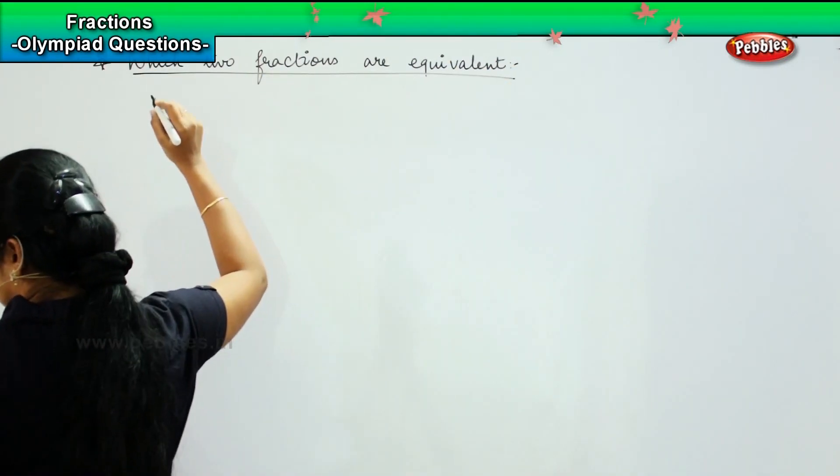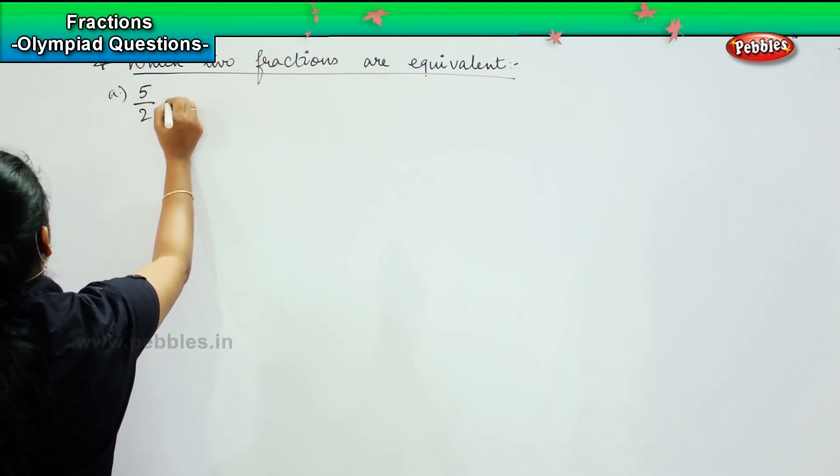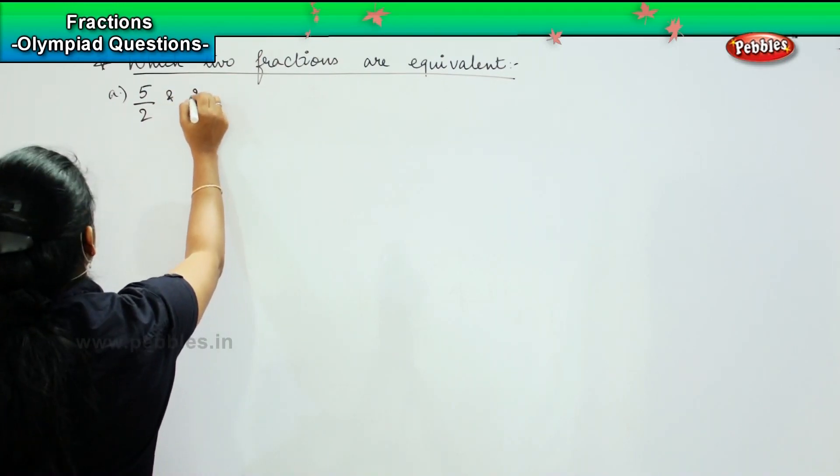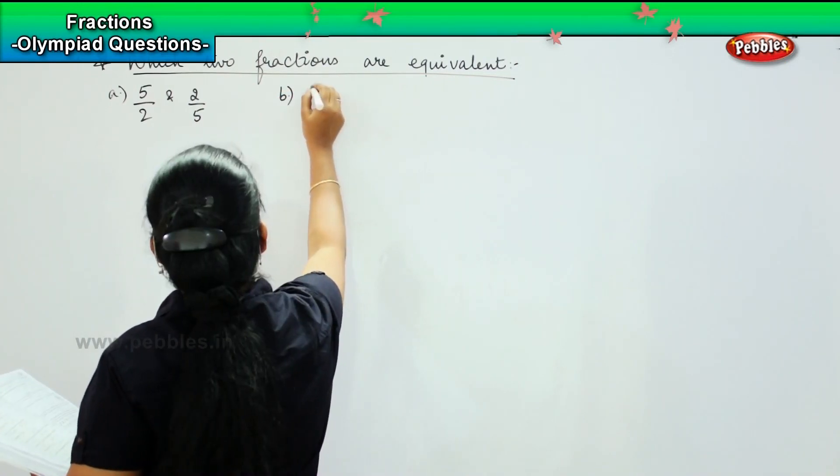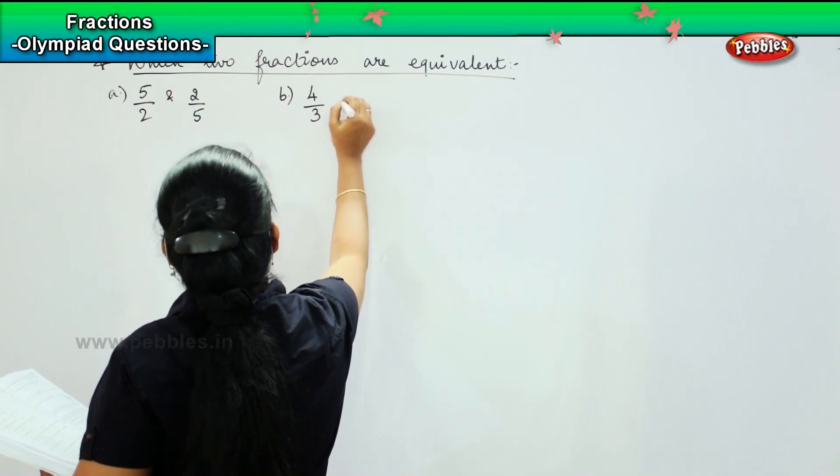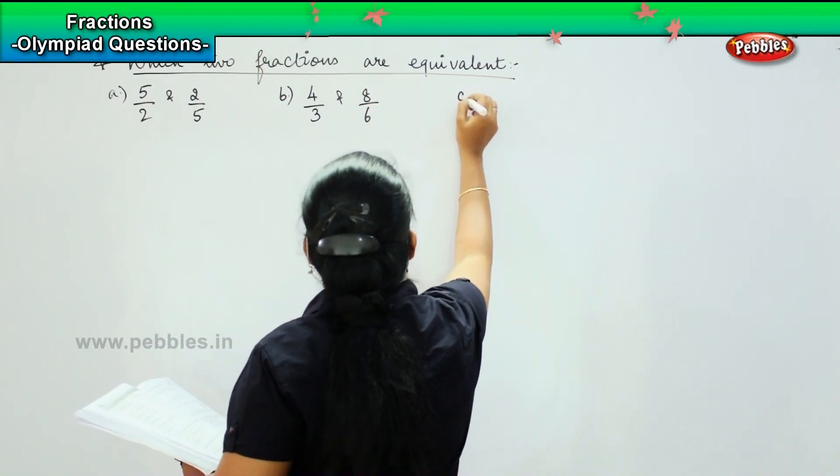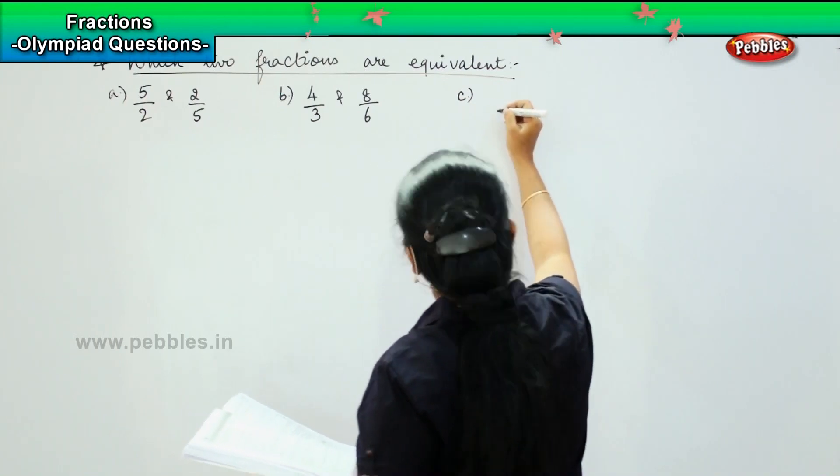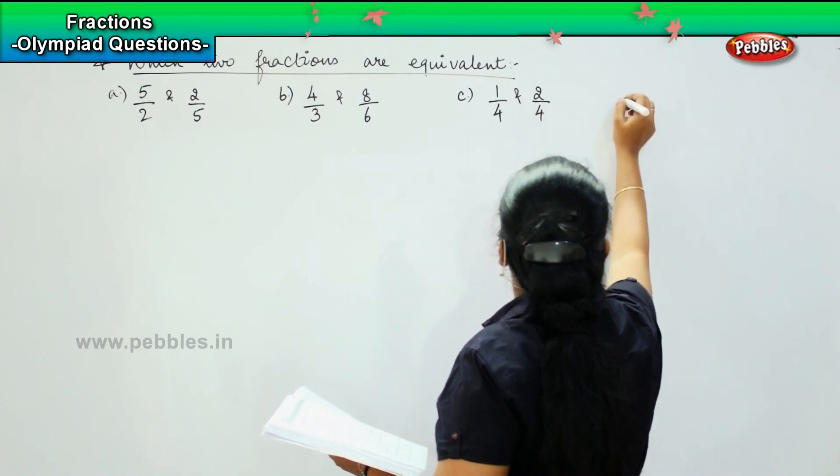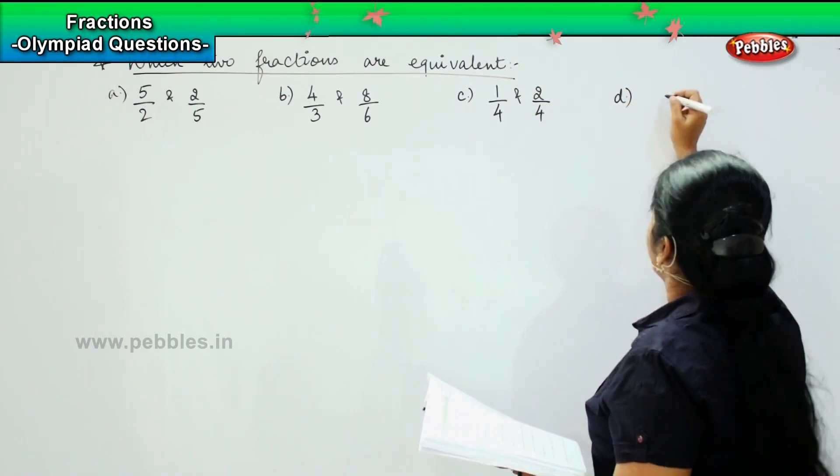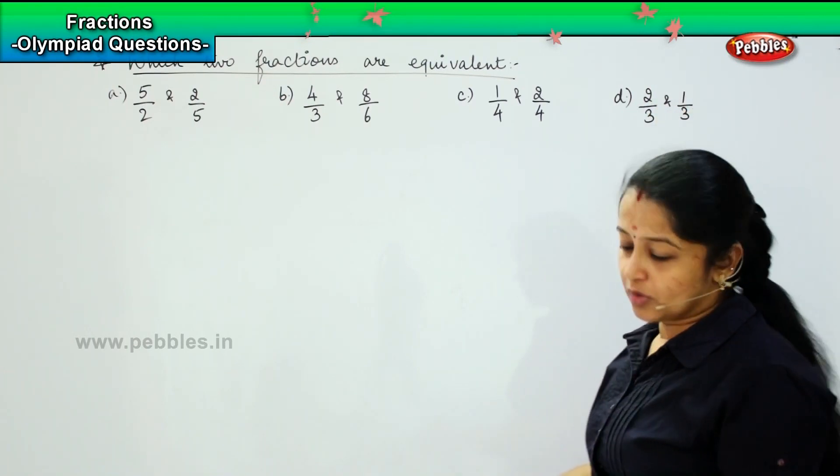The options are: 5/2 and 2/5, option B: 4/3 and 8/6, option C: 1/4 and 2/4, and option D: 2/3 and 1/2.